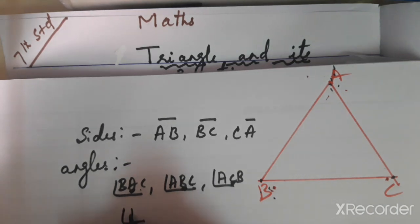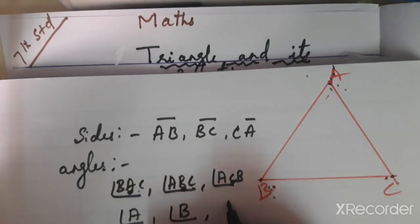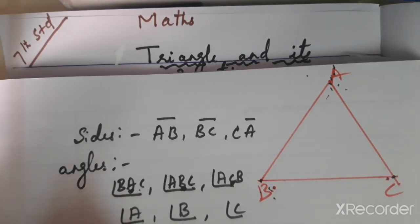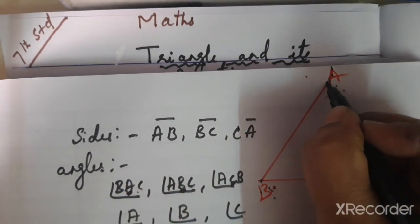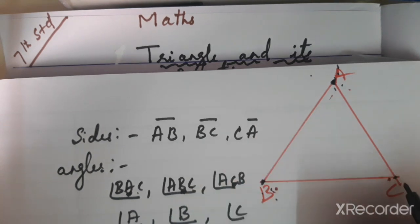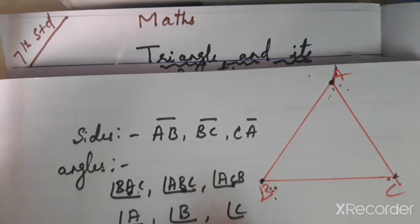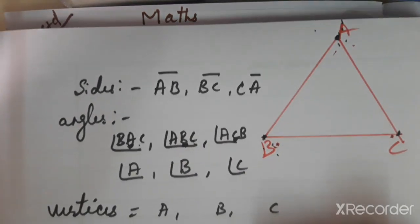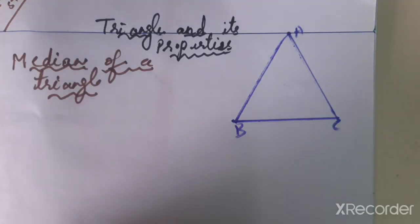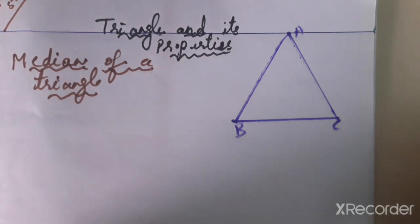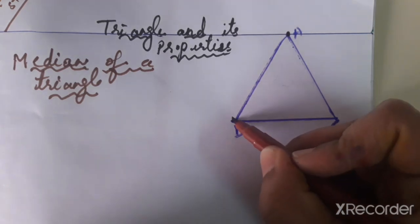We can also write them simply as angle A, angle B, and angle C. Now, the vertices of the triangle: point A is a vertex, B is a vertex, and C is also a vertex. So A, B, and C are the vertices of the triangle. Now you know what the sides, angles, and vertices of a triangle are.